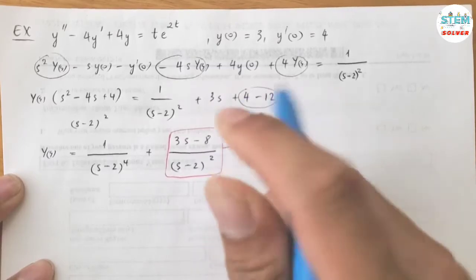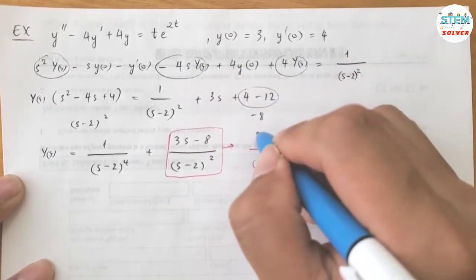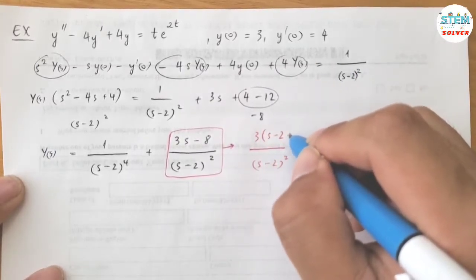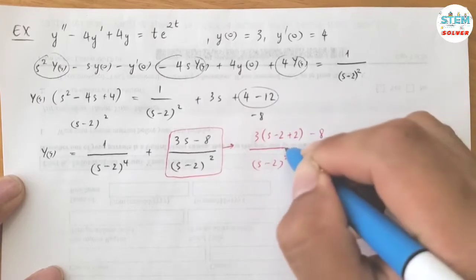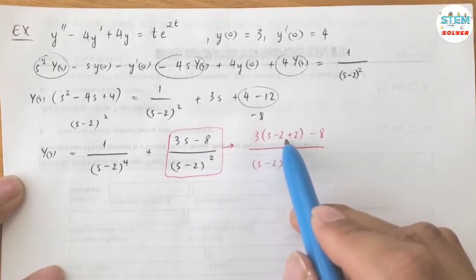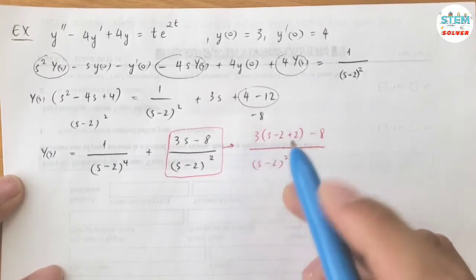So we need to have S minus 2 on top and bottom, so on top I just make it. But when I minus 2, I need to add 2 to compensate. So literally I add 0, right? So negative 2 plus 2 is 0. Alright, now distribute this in a certain way.